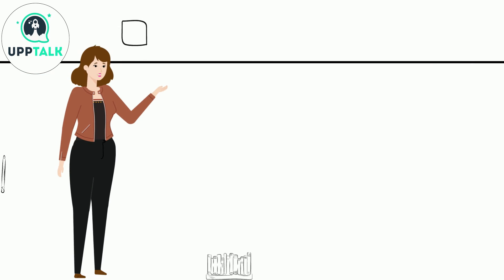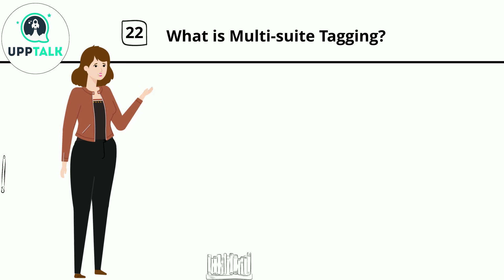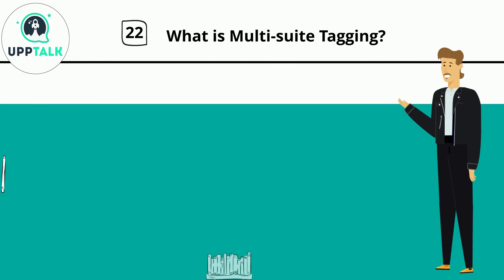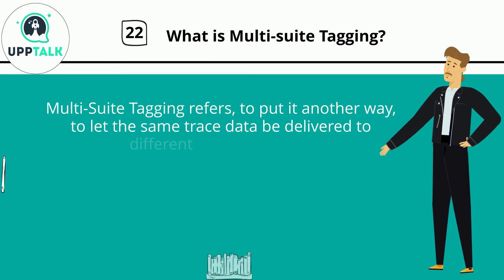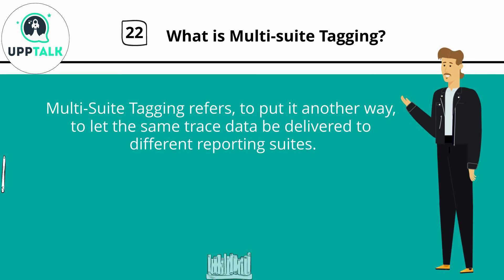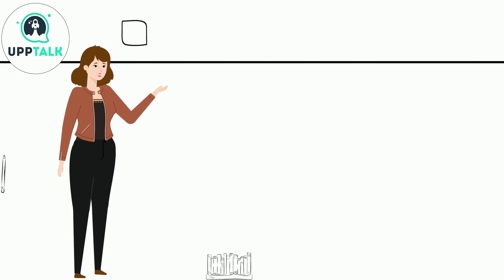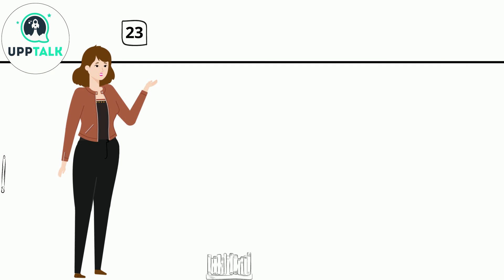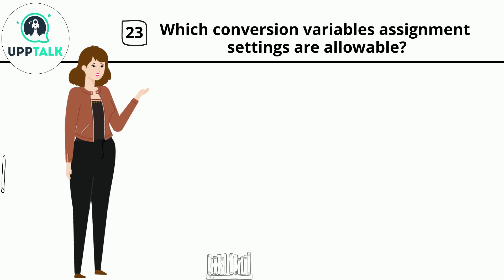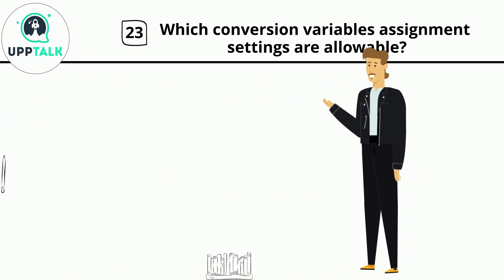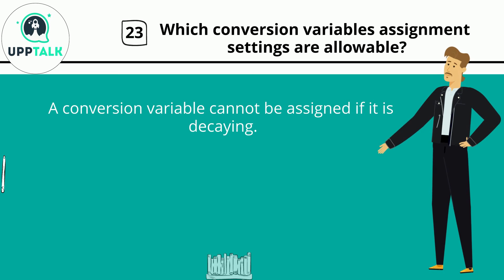Question 22: What is multi-suite tagging? Multi-suite tagging refers to letting the same trace data be delivered to different reporting suites. Question 23: Which conversion variable assignment settings are allowable? A conversion variable cannot be assigned if it is decaying.